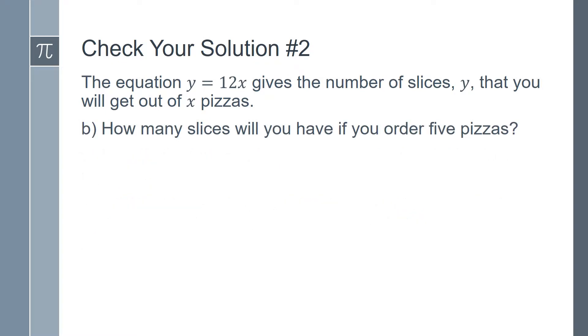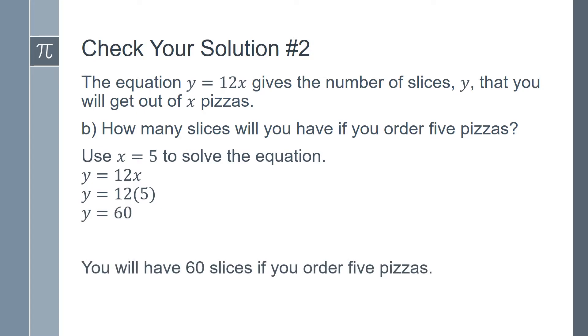Part b, how many slices will you have if you order 5 pizzas? In this case, we will use the number 5 to substitute in for x in the equation. So we have y equals 12x, which becomes y equals 12 times 5. 12 times 5 is 60, so we know that you will have 60 slices if you order 5 pizzas.